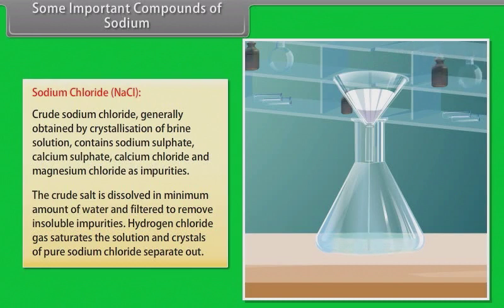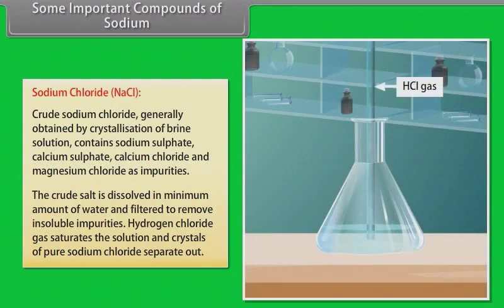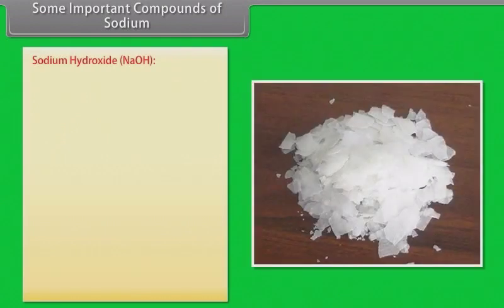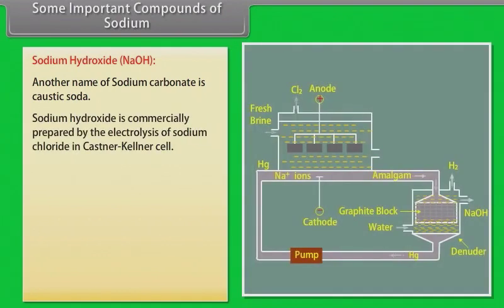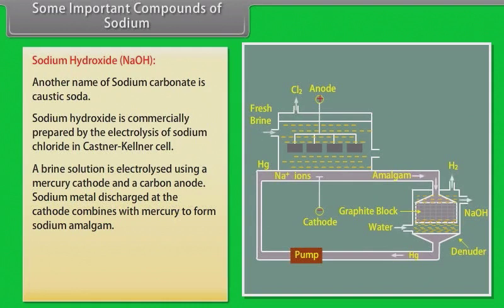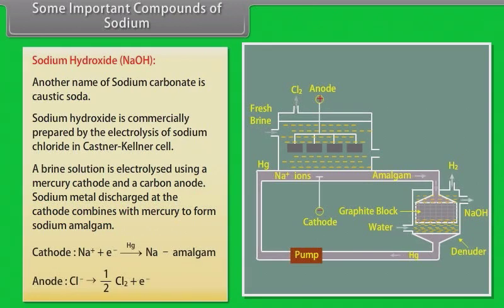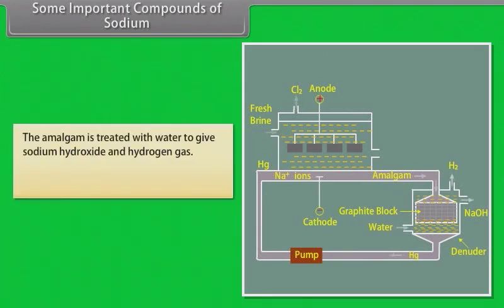Sodium hydroxide. Another name of sodium hydroxide is caustic soda. Sodium hydroxide is commercially prepared by the electrolysis of sodium chloride in Kastner-Kellner cell. A brine solution is electrolyzed using a mercury cathode and a carbon anode. Sodium metal discharged at the cathode combines with mercury to form sodium amalgam. The amalgam is treated with water to give sodium hydroxide and hydrogen gas.